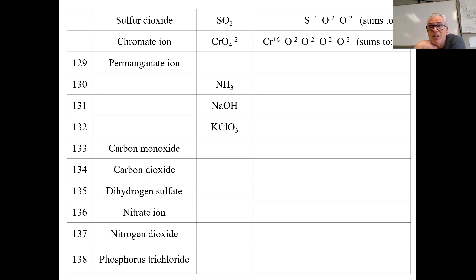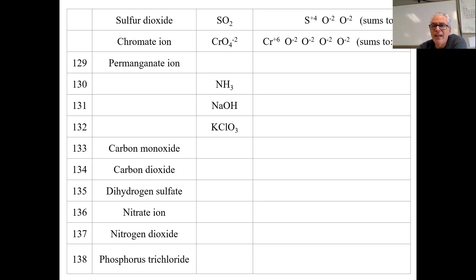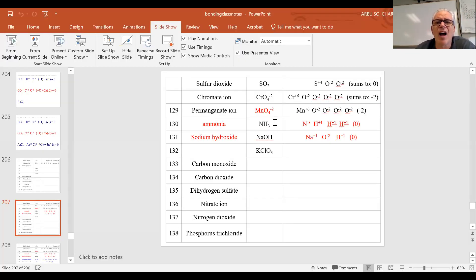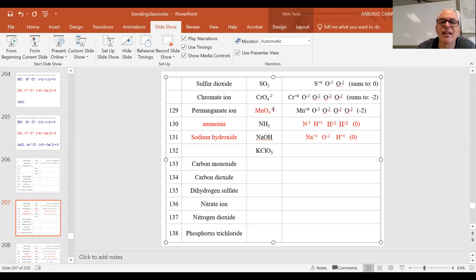The permanganate ion MnO4 has a negative one charge. We have four oxygens, each negative two — that's negative eight total. But the whole permanganate is negative one. So manganese, element 25, would have to have a positive seven oxidation number — and it does. There was a mistake in the slideshow — it should be negative one, and manganese is a positive seven. Fixed.